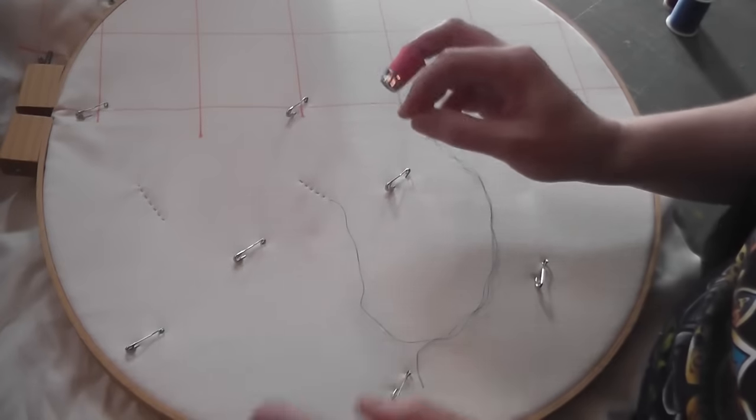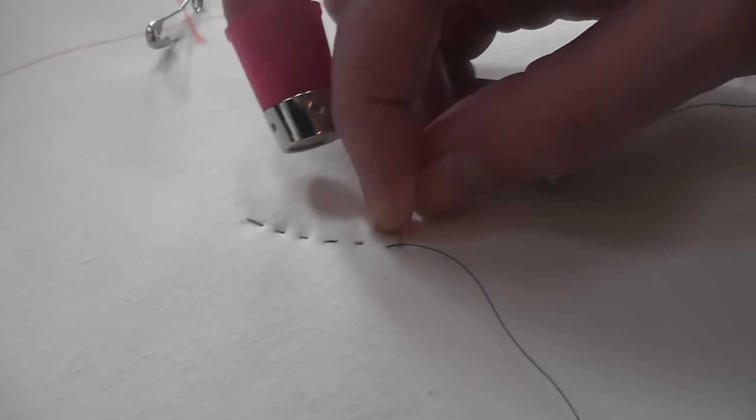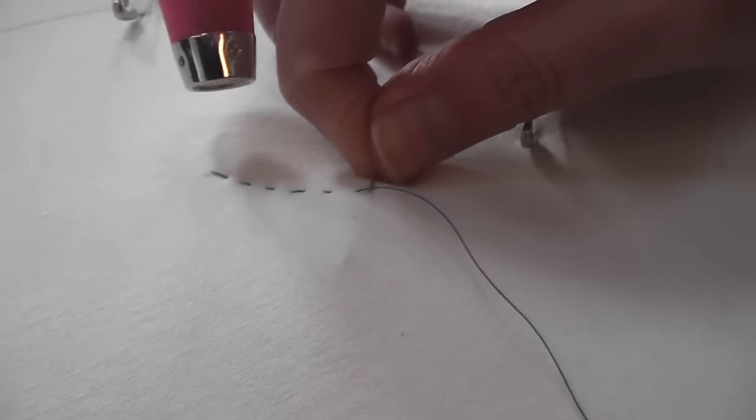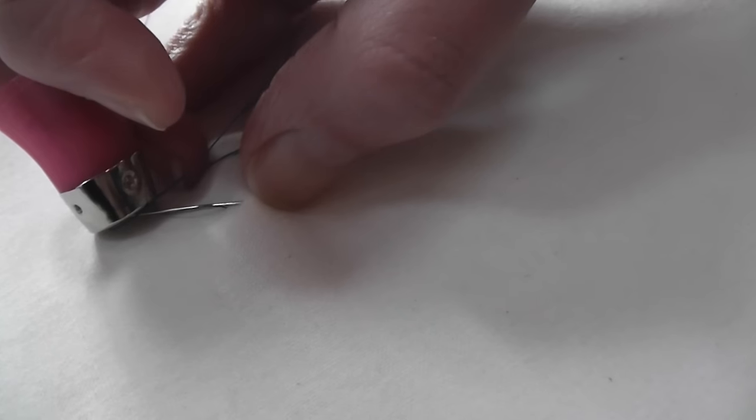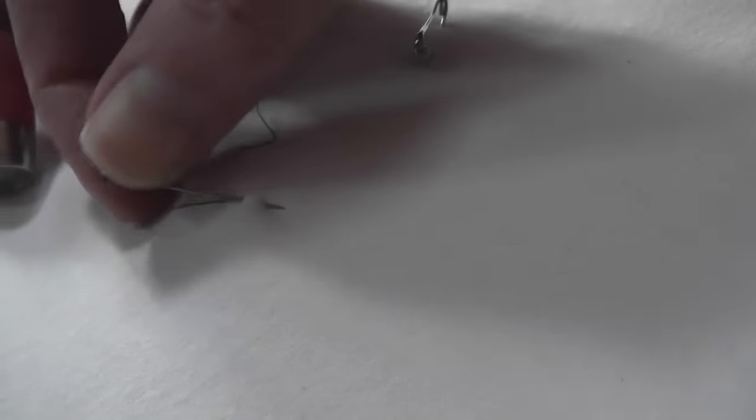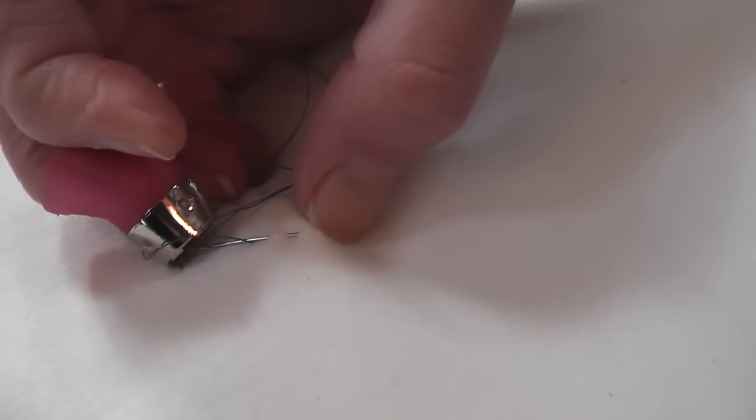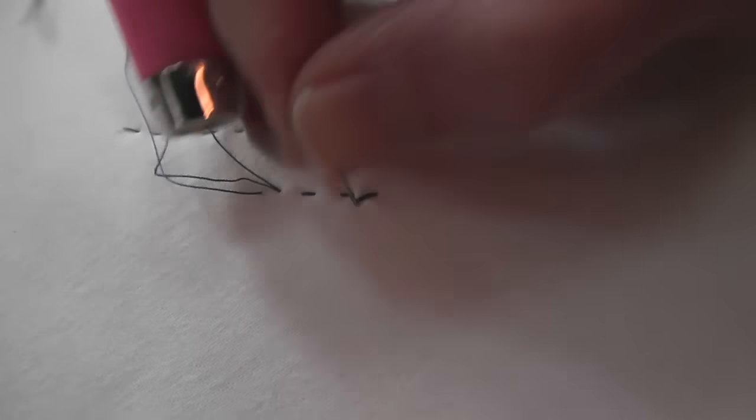The last things that you'll need to know: if you want to do two parallel lines you want to carry this thread between the layers. So I've gone in here and I'm going between the layers, that has not poked through to the back and I'm going to come out here. I'm just going to do a quick couple of stitches here. You can always back it up.